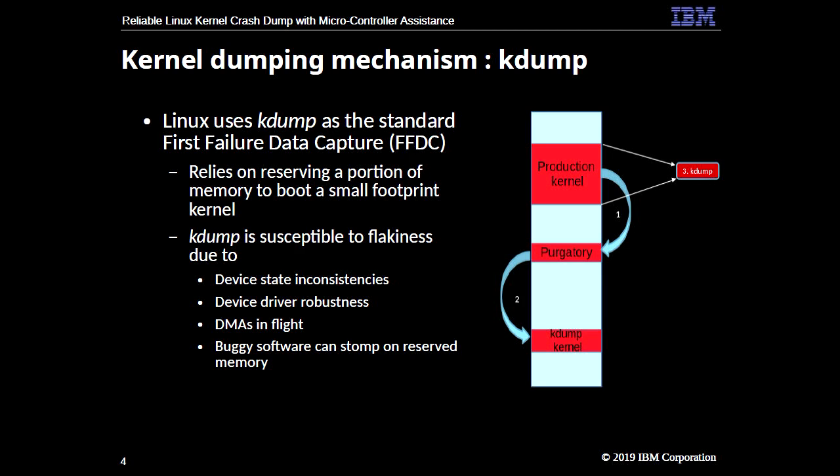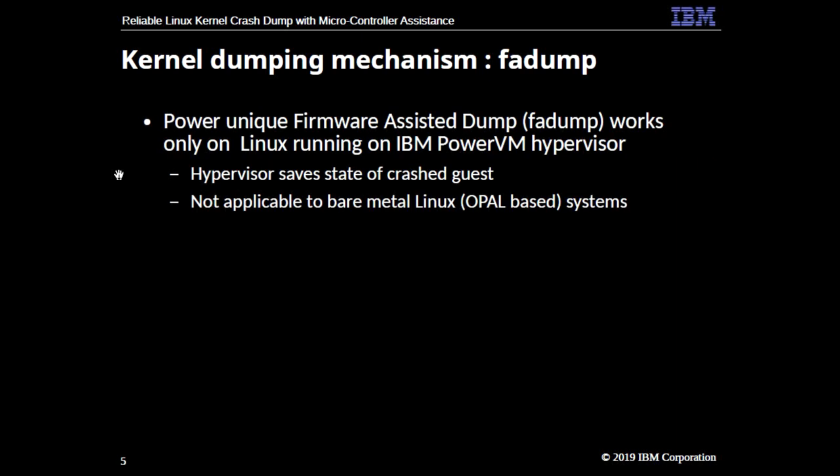The infrastructure is pretty stable but we do hit a number of issues because of the way it's done - buggy device drivers, DMA issues happening at the time of crashes, or somebody overriding the reserved memory. And if you are doing early system bring-up, you'll have more fun with buggy firmware or even buggy chips. We have an alternative solution for selected IBM Power systems called firmware-assisted dump. It works only on PowerVM, which is IBM's proprietary hypervisor, and the hypervisor helps get the dump, but it doesn't work on bare-metal Linux systems.